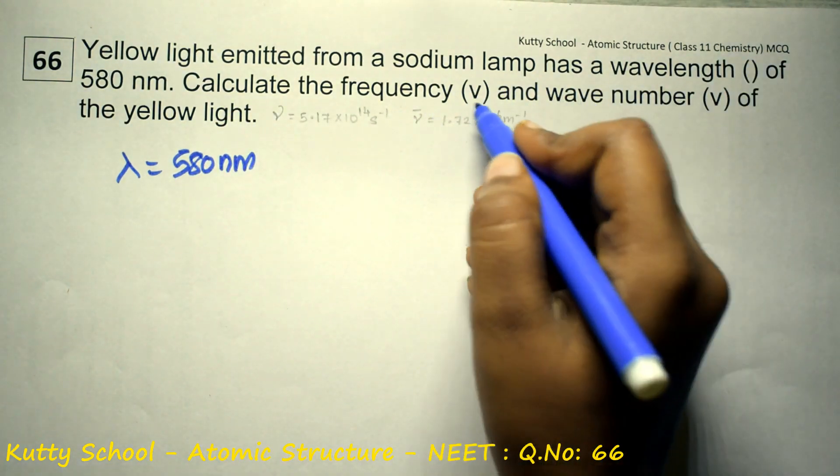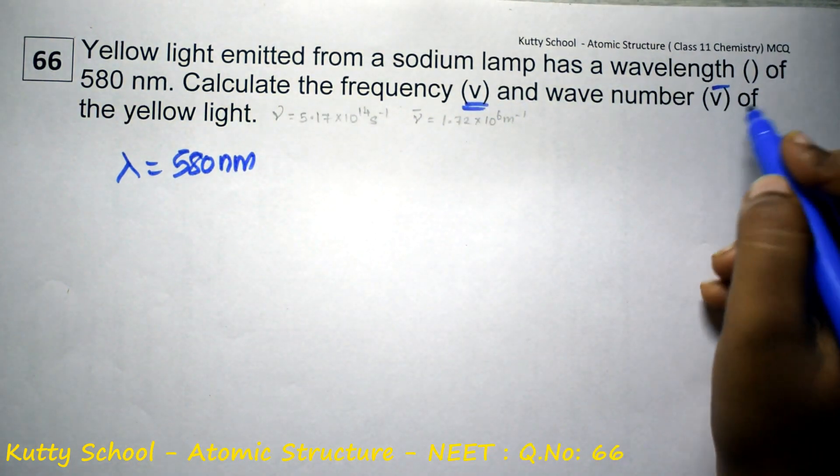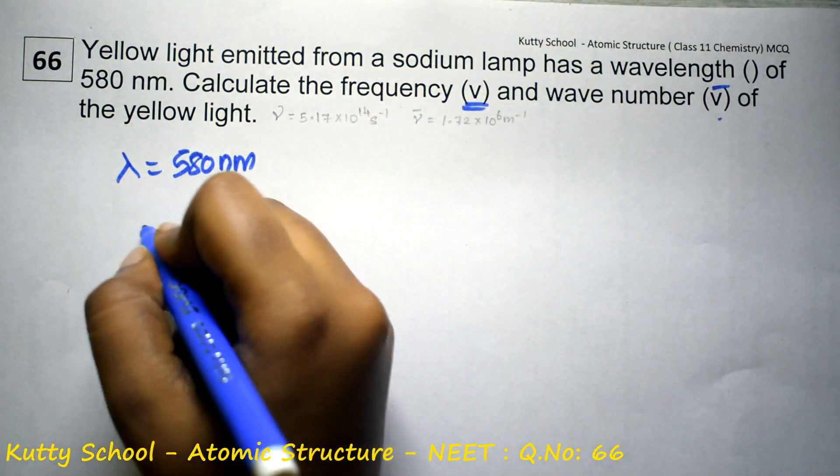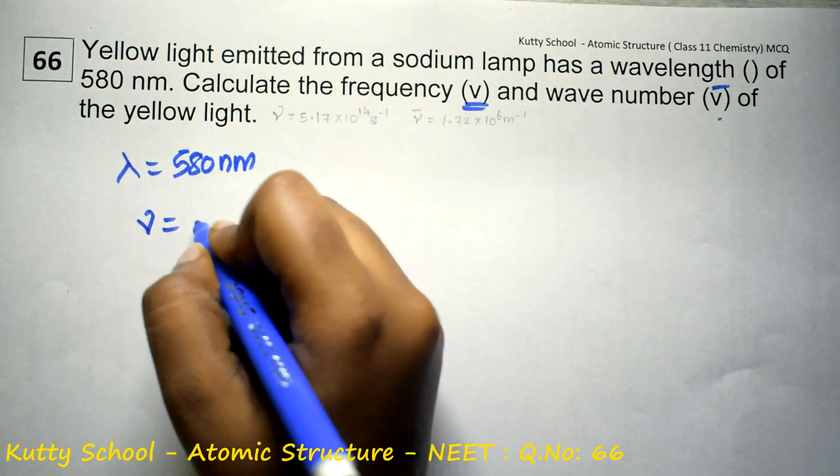Calculate the frequency and wave number nu bar of yellow light. Frequency nu is equal to c by lambda.